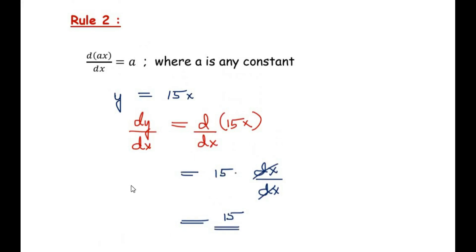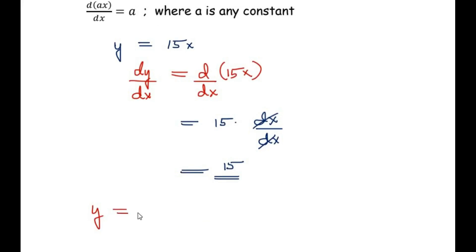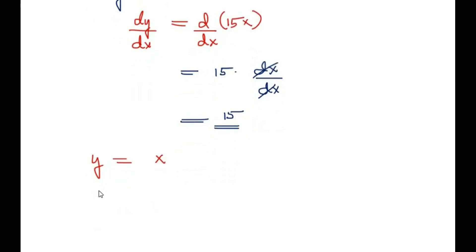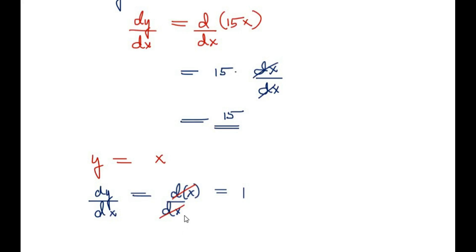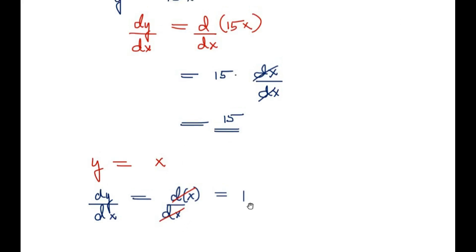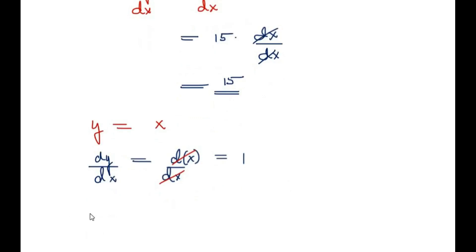Another example: let y = x. Then dy/dx = dx/dx = 1, because they divide each other. So the differentiation of x gives 1, and if there is any constant along with x you get that constant as the answer. Another example you can try: y = 213x — differentiate this and give your answer in the comment section below.